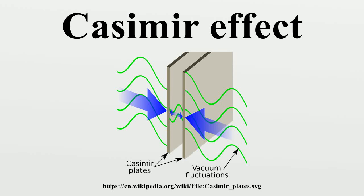In quantum field theory, the Casimir effect and the Casimir-Polder force are physical forces arising from a quantized field. They are named after the Dutch physicist Hendrik Casimir. The typical example is of two uncharged conductive plates in a vacuum, placed a few nanometers apart.